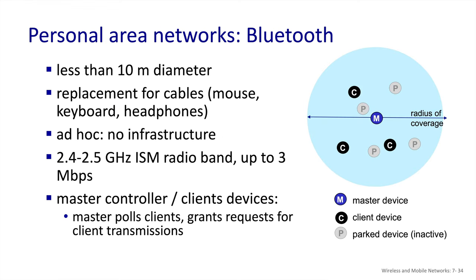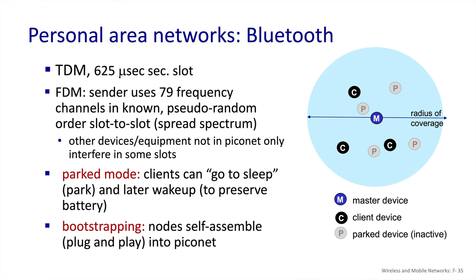Covering an even smaller geographic area than local area networks, we have personal area networks, the most common being Bluetooth. These are designed to reduce the number of cables needed for convenience. They are ad hoc in the sense that there is no dedicated base station; however, there is a designated controller for each Bluetooth network and the rest operate in client mode. They share the 2.4 GHz band, so they can interfere with 802.11 protocols, and they use a polling scheme where the controller polls clients. To combat interference, an FDM approach is used — devices hop from channel to channel — and a parked mode allows clients to sleep when not transmitting or receiving.